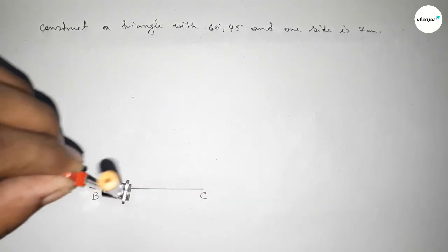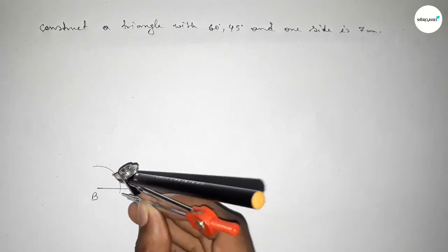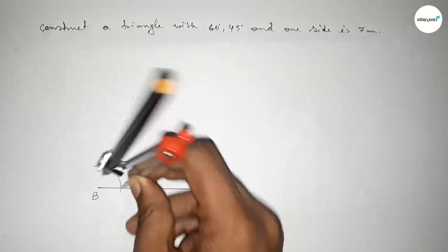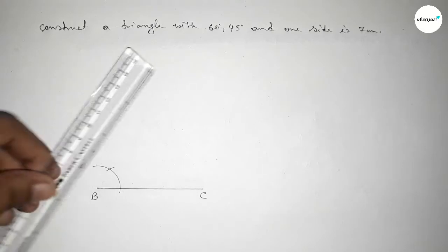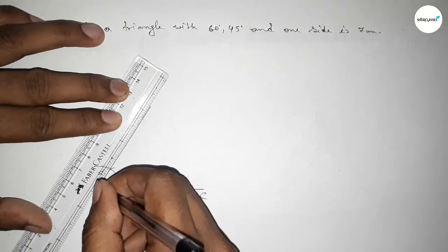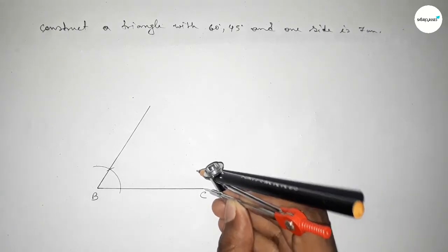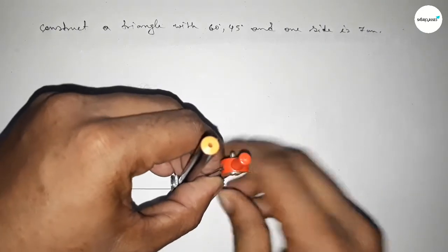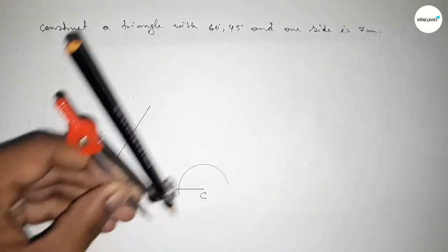Now drawing a 60 degree angle at point B. Putting the compass at B and taking any length, drawing an arc. Then putting the compass at the arc intersection with the same length and cutting here, so both lines intersect at a point. Joining this line to get a 60 degree angle at B.